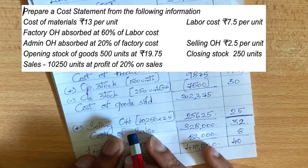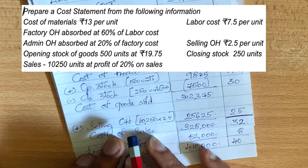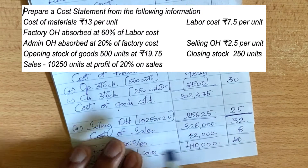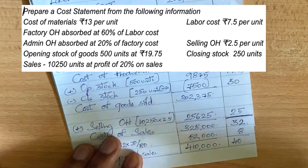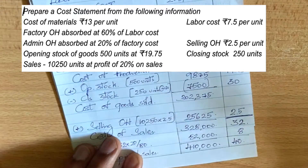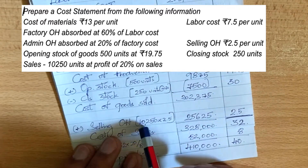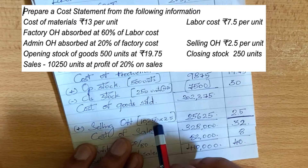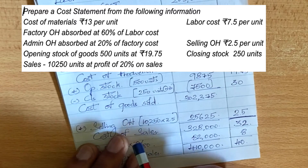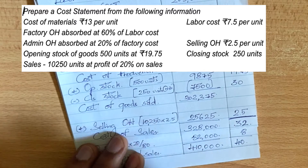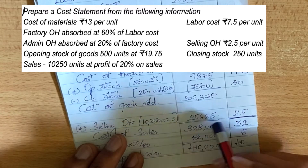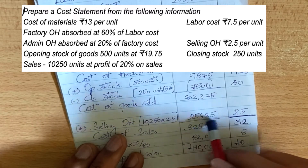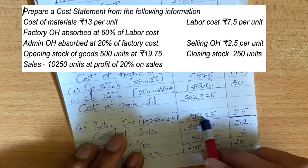Lastly, selling and distribution overheads are 2.5 per unit. We sold 10,250 units, so 10,250 into 2.5 gives us the actual selling overhead figure.